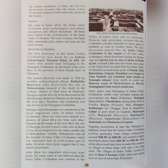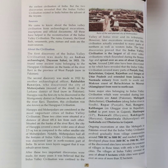However, later excavations revealed that this civilization actually extended to many parts of northern as well as western India. The later discoveries proved that the Indus Valley Civilization is the largest of all river valley civilizations, which flourished during the Bronze Age and spread over an area of about 12,99,600 square km. Around 2,800 sites have been discovered, revealing that the Indus Valley Civilization covered many parts of Punjab, Sindh, Baluchistan, Gujarat, Rajasthan, and parts of Uttar Pradesh.